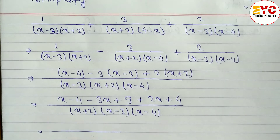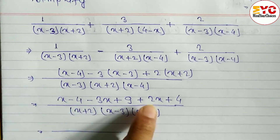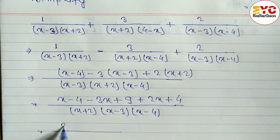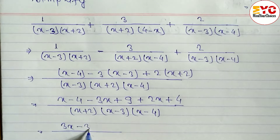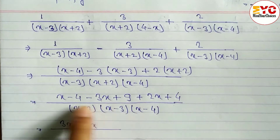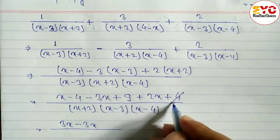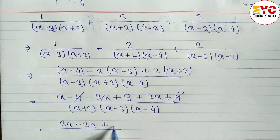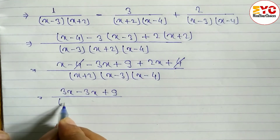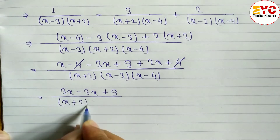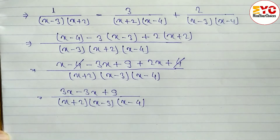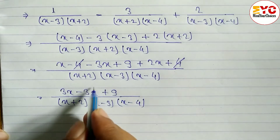For the x terms: x plus 2x is 3x, minus 3x gives 0. For the constants: negative 4 and positive 4 cancel, leaving plus 9. So we get 9 over (x plus 2)(x minus 3)(x minus 4).